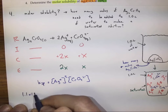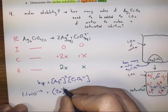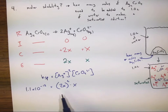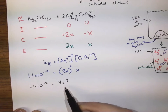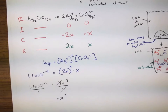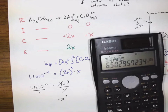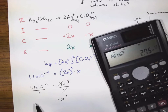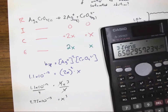So we have 1.1 times 10 to the negative 12 equal to the silver concentration, which is (2x)², times the chromate concentration, which is x. That becomes 4x² times x, which is 4x cubed. Dividing by 4: 2.75 times 10 to the negative 13 equals x cubed. Taking the cube root: x equals 6.50 times 10 to the negative 5.